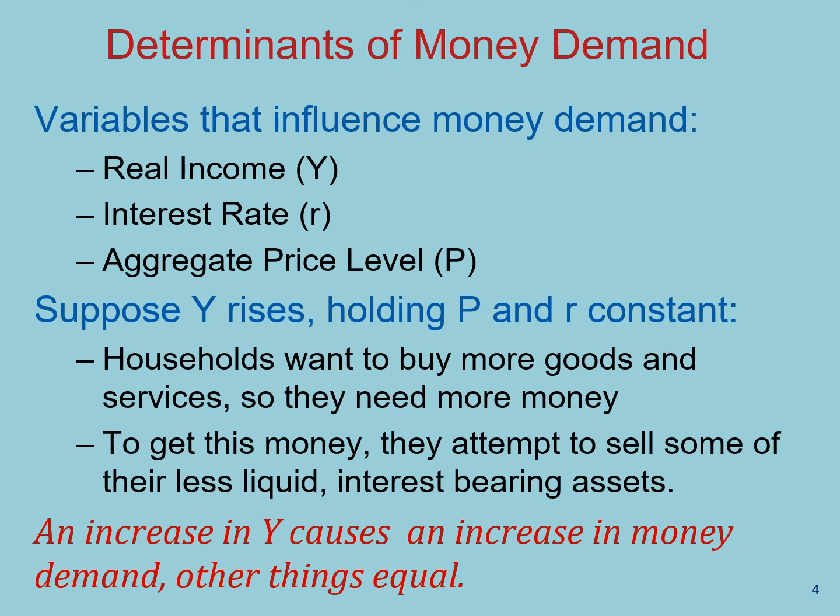Because money supply is fixed by the Fed, let's focus on understanding the demand for money. The key determinants of money demand are income, the interest rate, and the aggregate price level.